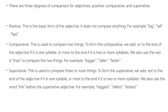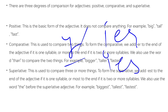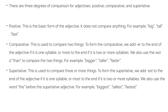For adjectives ending in -y, we use the spelling -ier and -iest. For example: happy, happier, happiest; easy, easier, easiest; heavy, heavier, heaviest. This is the positive, comparative, and superlative pattern for -y ending adjectives.